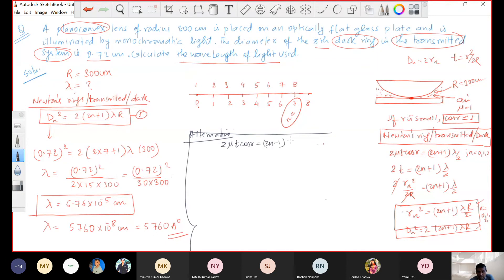Cossar equals to n minus 1 lambda by 2. If I take this, I have to start from n equals 1.